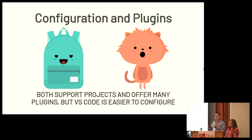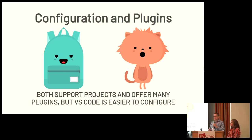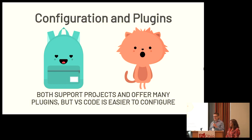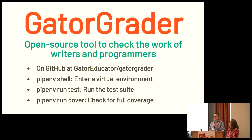I'd like to reflect on configurations and plugins for these two text editors. Both provide great ability to configure. However, the VS Code backpack mascot is really smiling — and that's because it is so easy to find different extensions for VS Code; you just search in the extension marketplace. If you're a Vim user, you have to crawl GitHub, search for the right tags, and go to a site called Vim Awesome. In that regard, the winner for configuration and plugins is most likely VS Code.